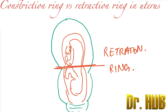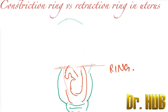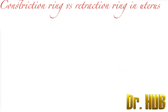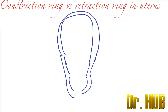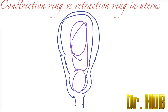Next let's look at the constriction ring. The constriction ring is situated below, and this is where the fetus will lie. This is the demarcation — it lies below.